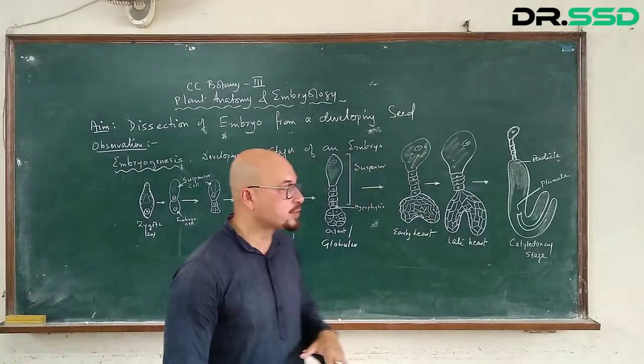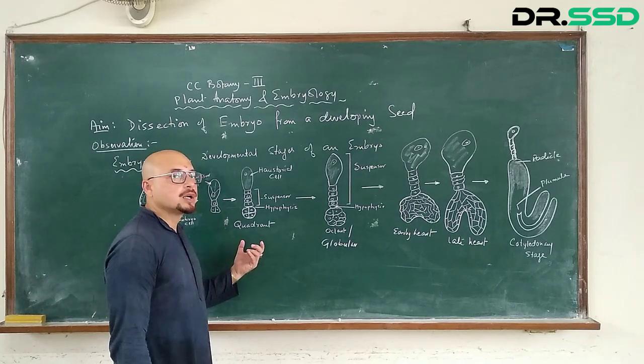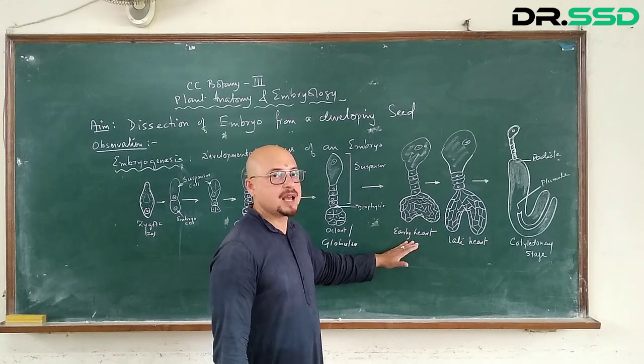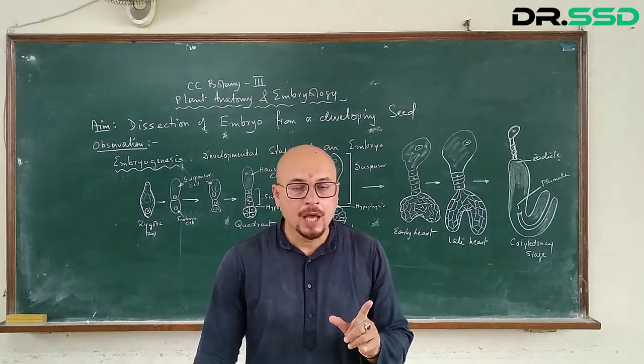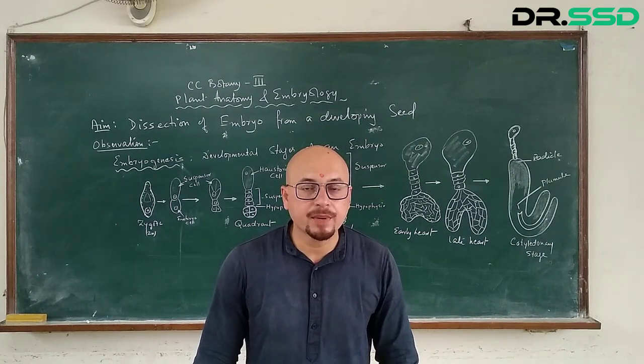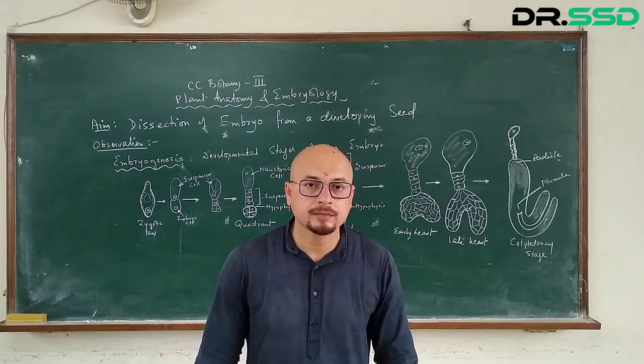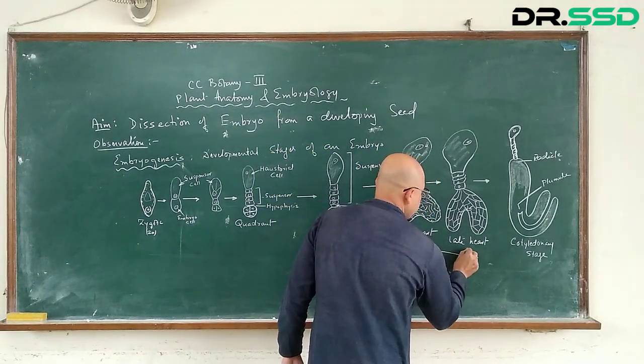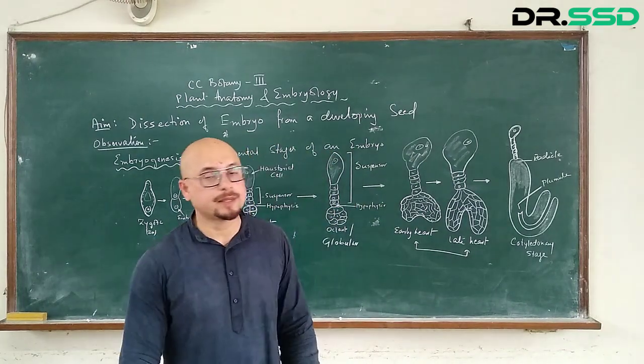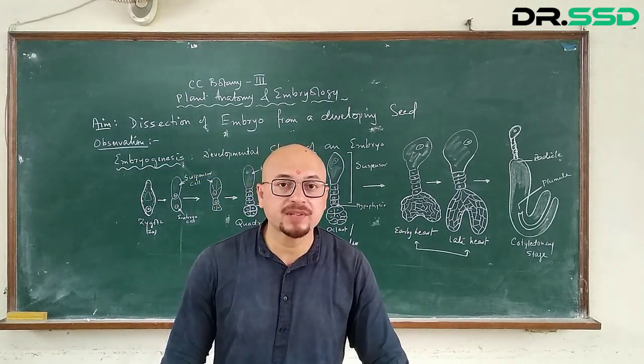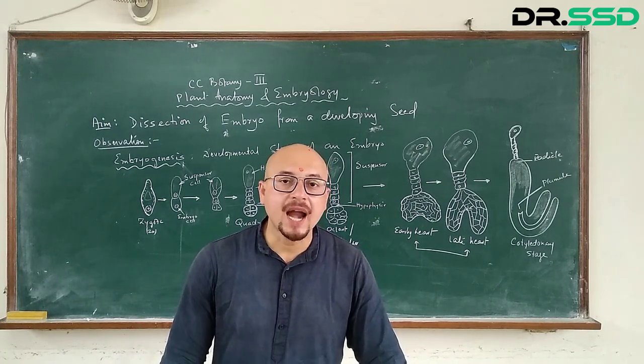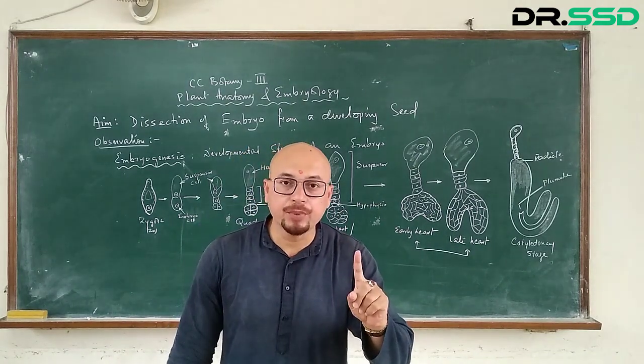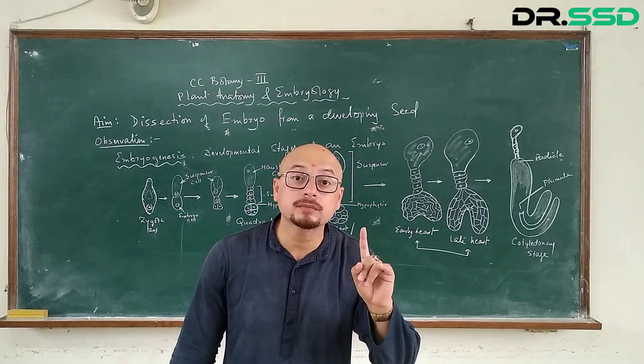So you see the developmental stages. Therefore there is a quadrant stage, or we can start with a globular. So the globular, then the early heart-shaped, late heart-shaped and cotyledon. So in this particular experiment I am going to ask you to show me embryo of early and late heart-shaped only. That means once you cut the section of the seed you are going to show me at least one of these two stages.